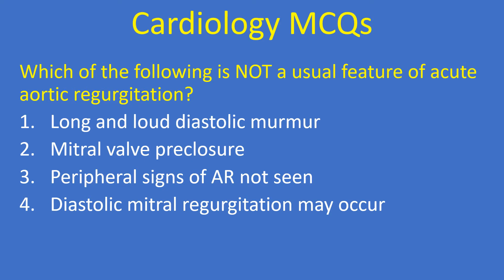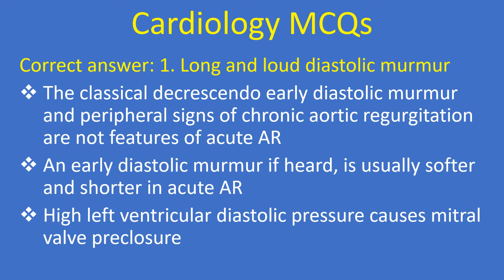Question: Which of the following is not a usual feature of acute aortic regurgitation? Option 1: long and loud diastolic murmur. Option 2: mitral valve pre-closure. Option 3: peripheral signs of AR not seen. Option 4: diastolic mitral regurgitation may occur. Correct answer: 1, long and loud diastolic murmur.